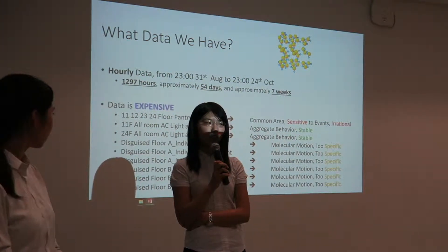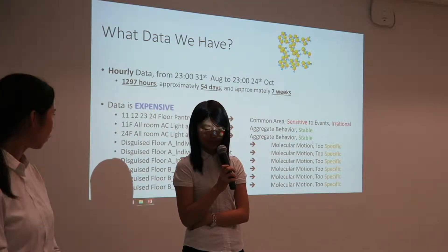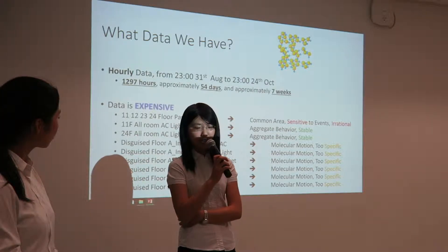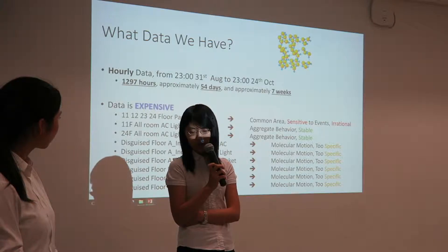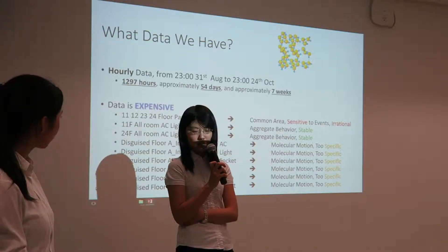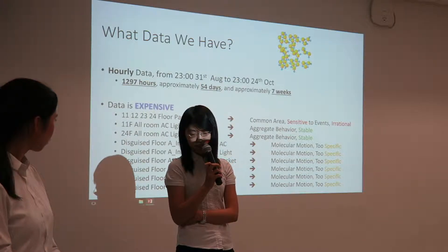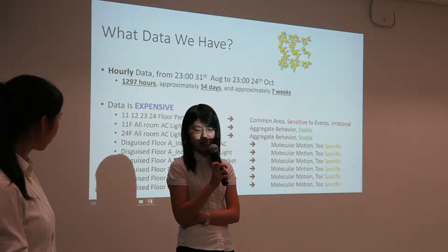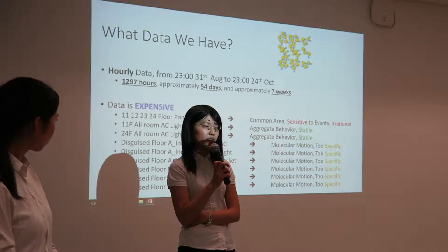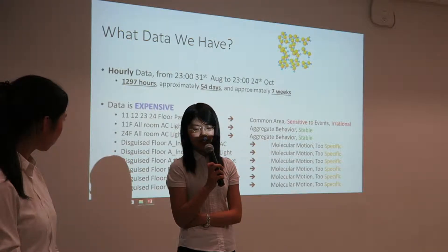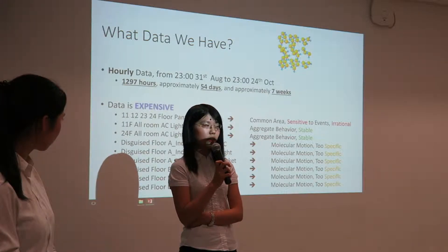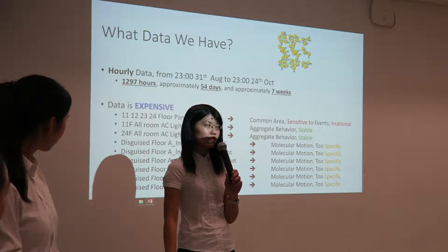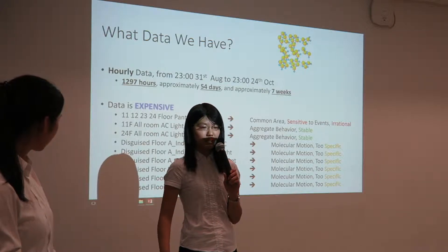For pantry-based data, people generally don't care a lot about their electricity use, so it is very sensitive to events and we can see a very irrational trend in the data. For the floor base, it is the aggregate amount of electricity use across all rooms, so it is basically more stable. For the room base, since every room has a particular habit of using electricity, it is too specific. Like water molecules, we take the whole floor as a unit for research. So our research is generally based on the pantry base and floor base data.